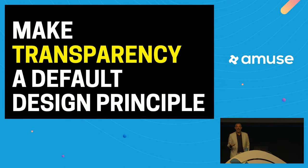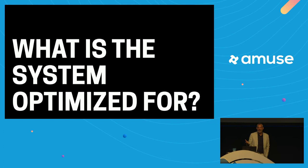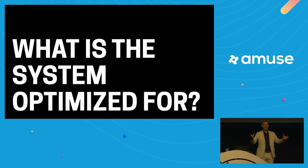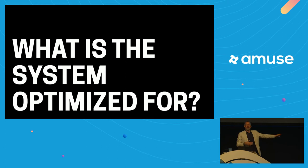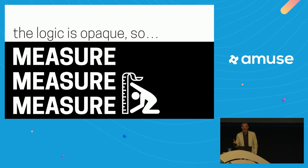How can we make transparency a default design principle? Surface these things in the actual application and be really clear what the system is optimized for. The system itself should declare what it's optimized for — not just to customers but within our own teams. If the logic is opaque, let's be incredibly intentional about the results we want to see so we can measure them. Is the system delivering on what it's optimized for? Is it possibly undermining other things we care about but aren't explicitly optimizing for?